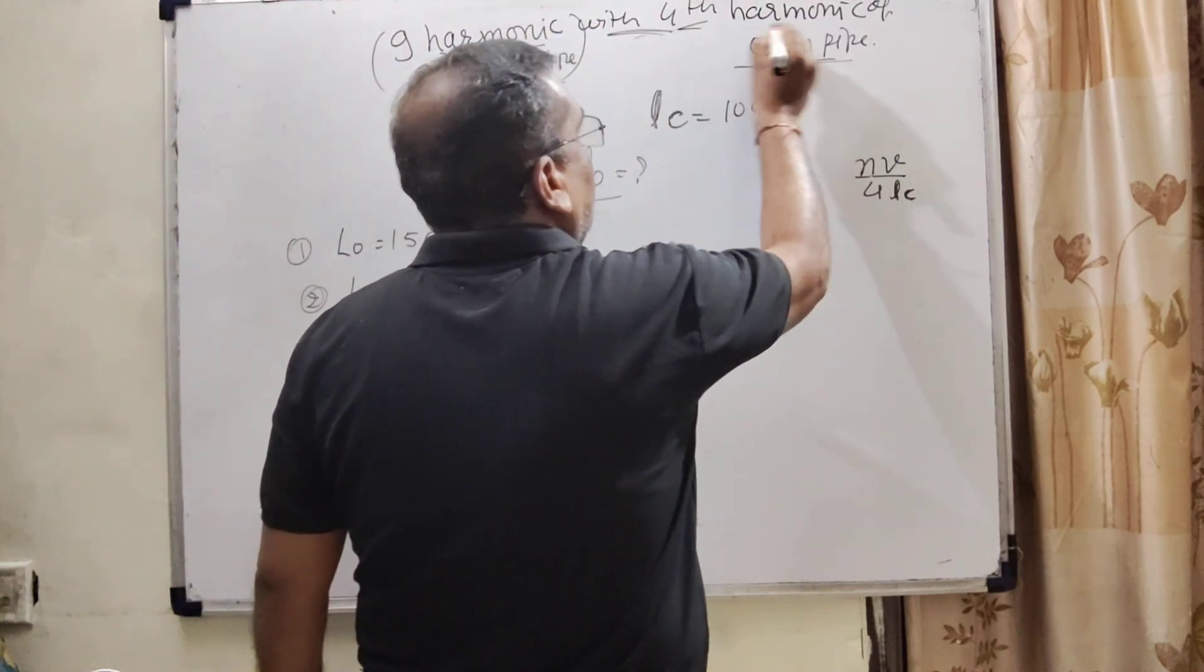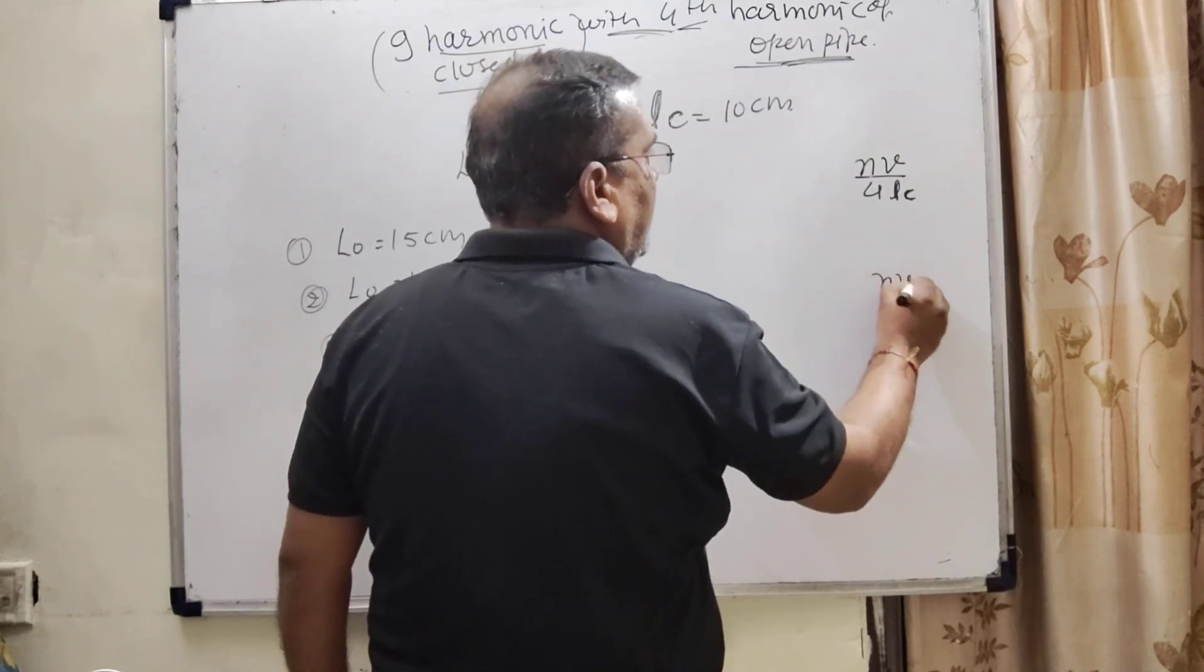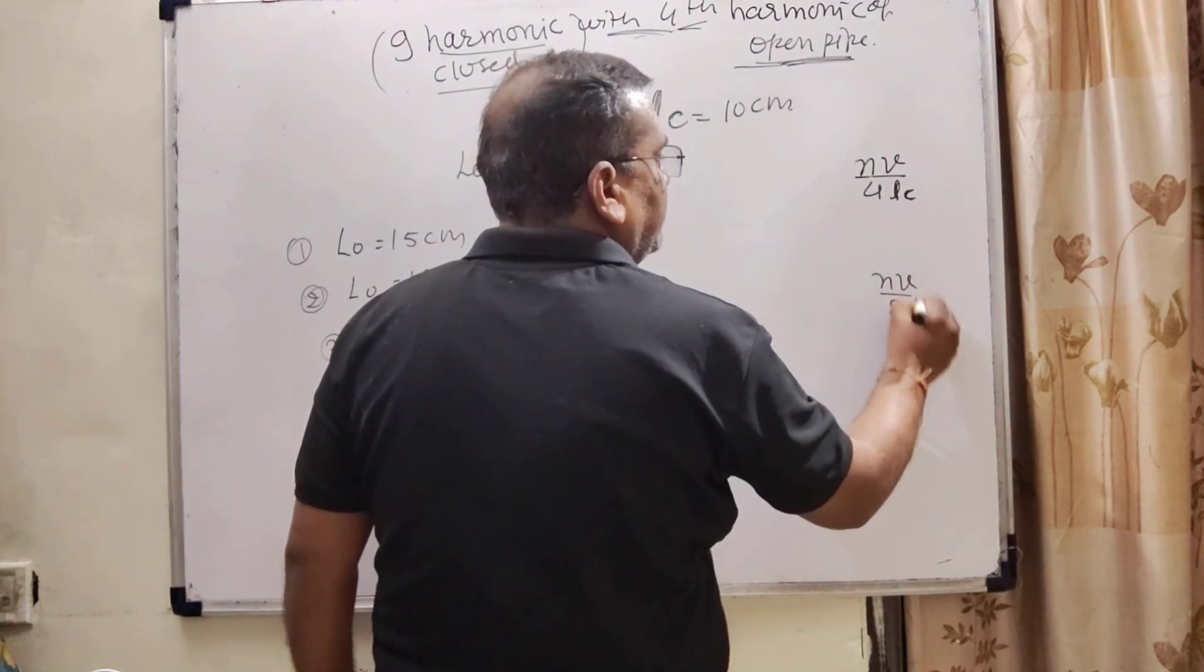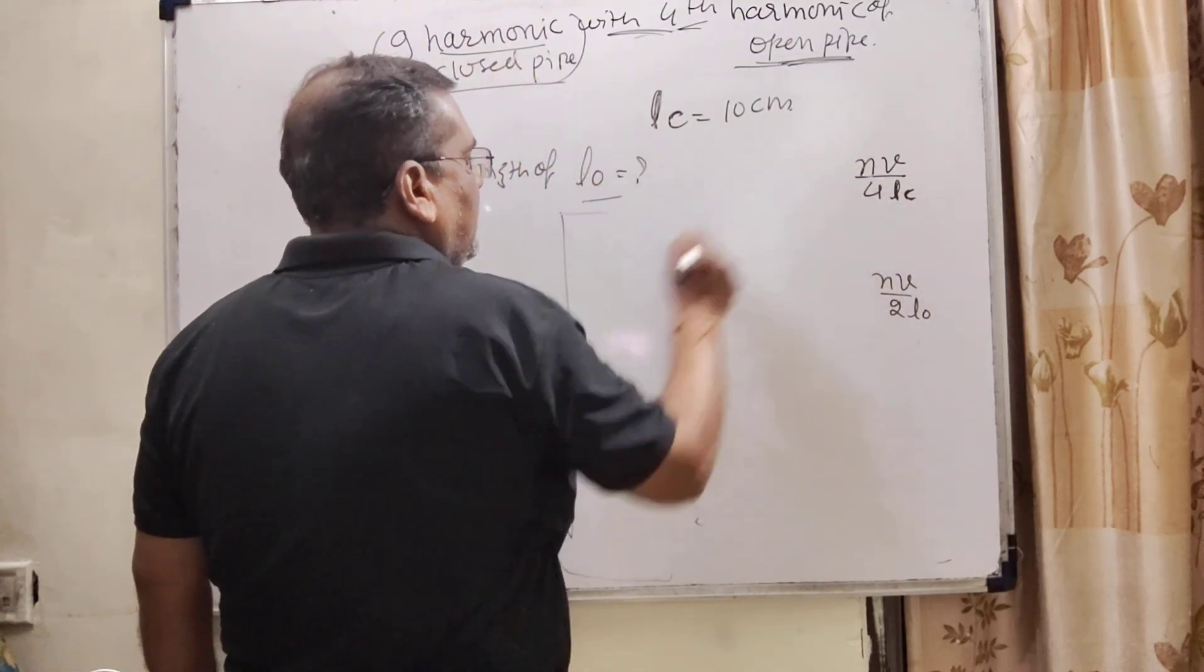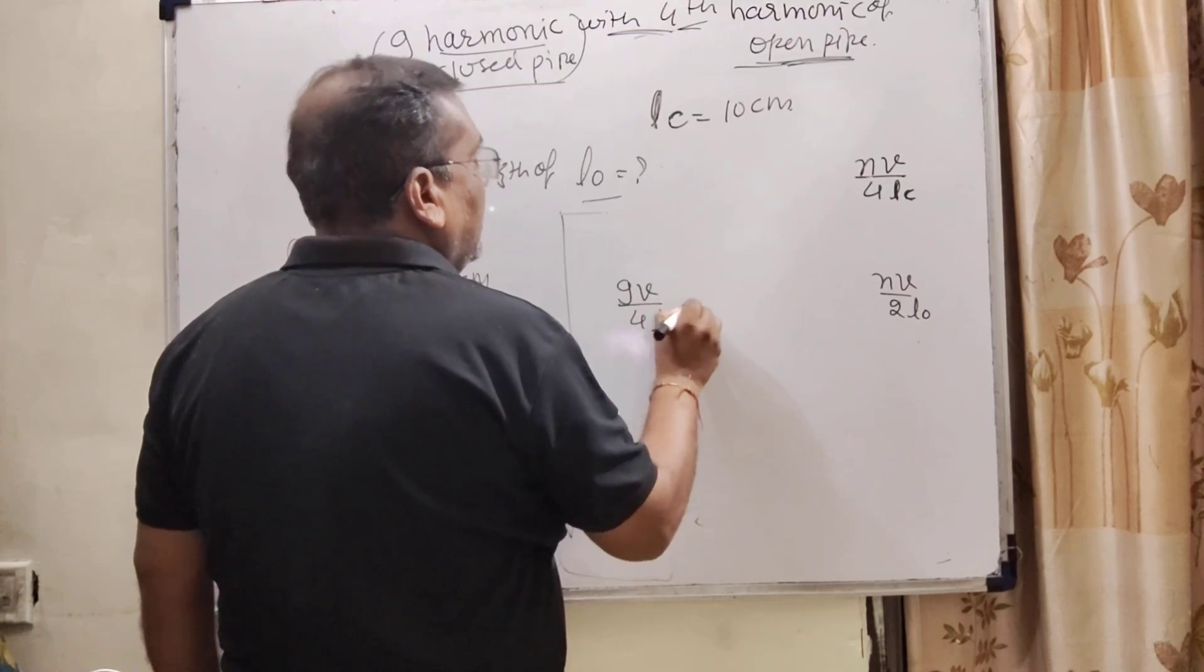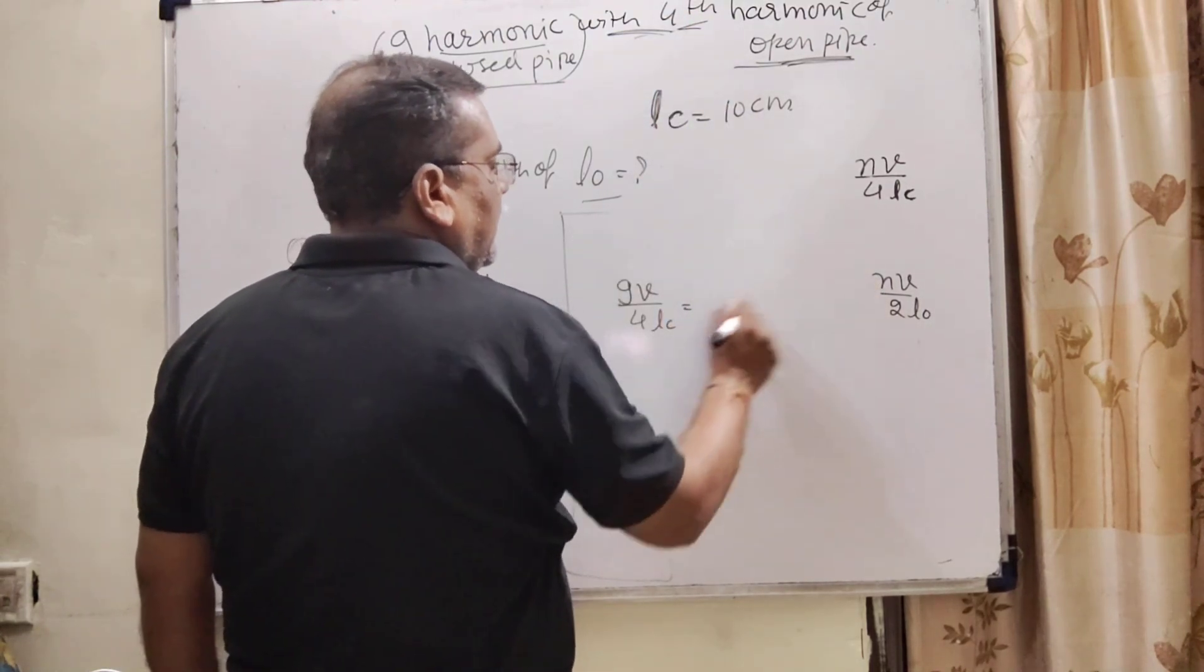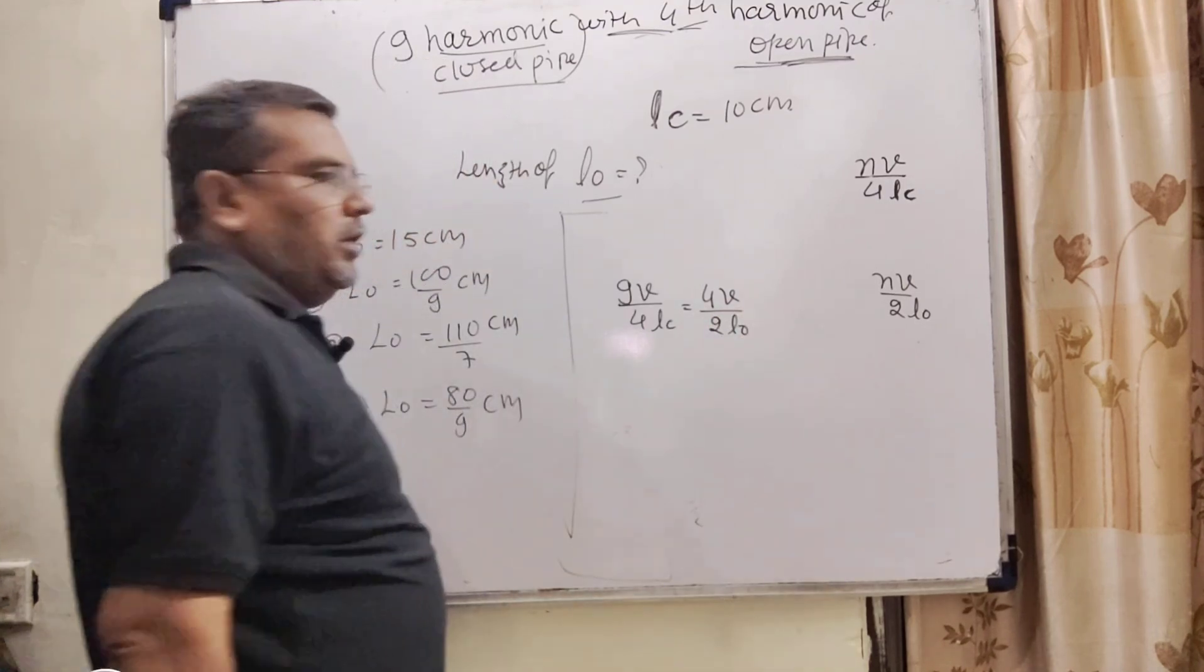And the second formula for the open pipe, that is NV/2L0. So, here ninth harmonic means N = 9V/4LC. And fourth harmonic means here N = 4V/2L0.